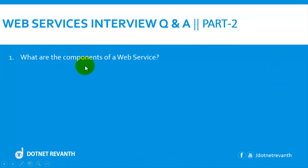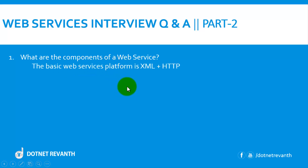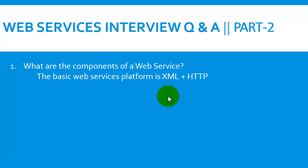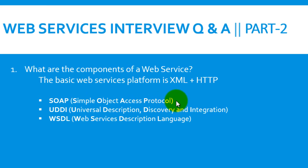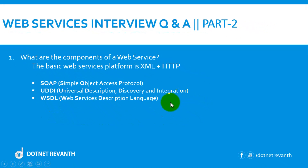First question: what are the components of a web service? A web service is platform independent. It uses XML and HTTP as the basic platform, and it uses 3 components: SOAP, UDDI, and WSDL. SOAP means Simple Object Access Protocol, UDDI means Universal Description Discovery and Integration, and WSDL means Web Services Description Language.